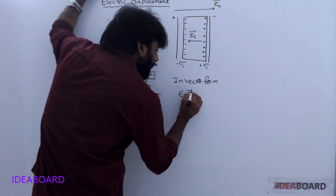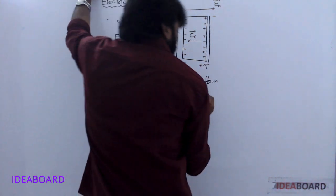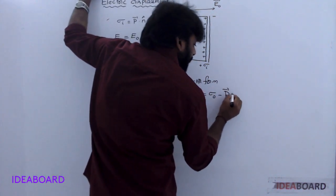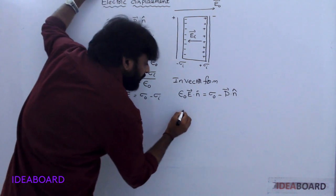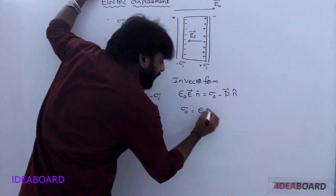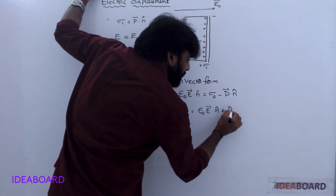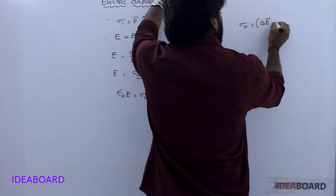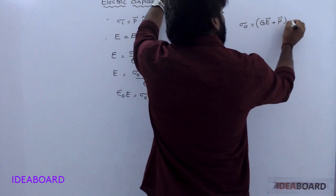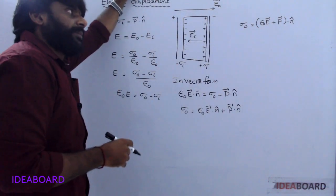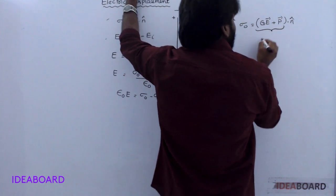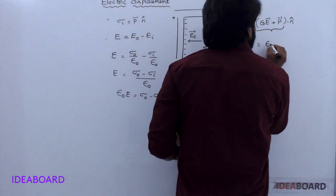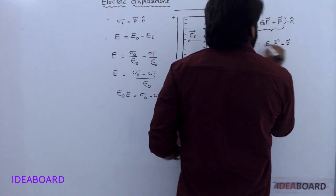In vector form: epsilon-naught E-bar dot n-cap equals sigma-naught minus sigma-i, and since sigma-i equals P-bar dot n-cap, rearranging gives sigma-naught equals epsilon-naught E-bar dot n-cap plus P-bar dot n-cap. Therefore sigma-naught equals (epsilon-naught E-bar plus P-bar) dot n-cap. This quantity epsilon-naught E-bar plus P-bar is called the electric displacement, D-bar.